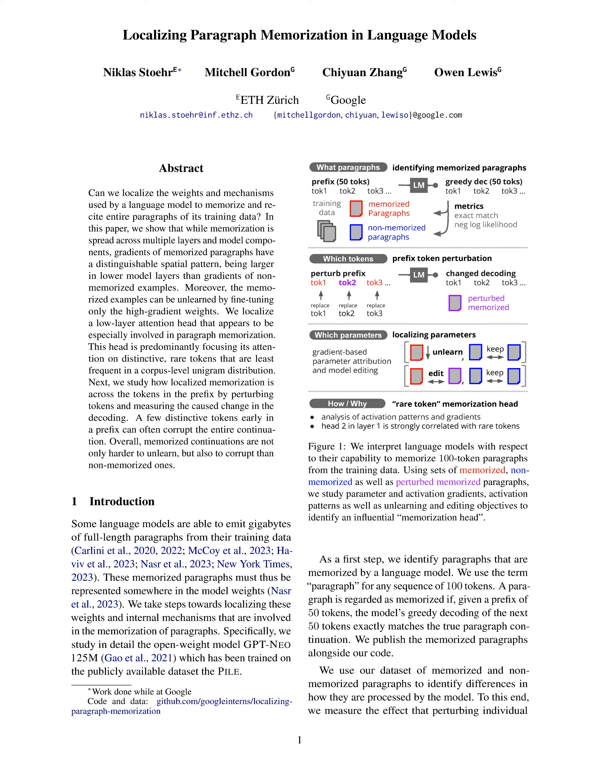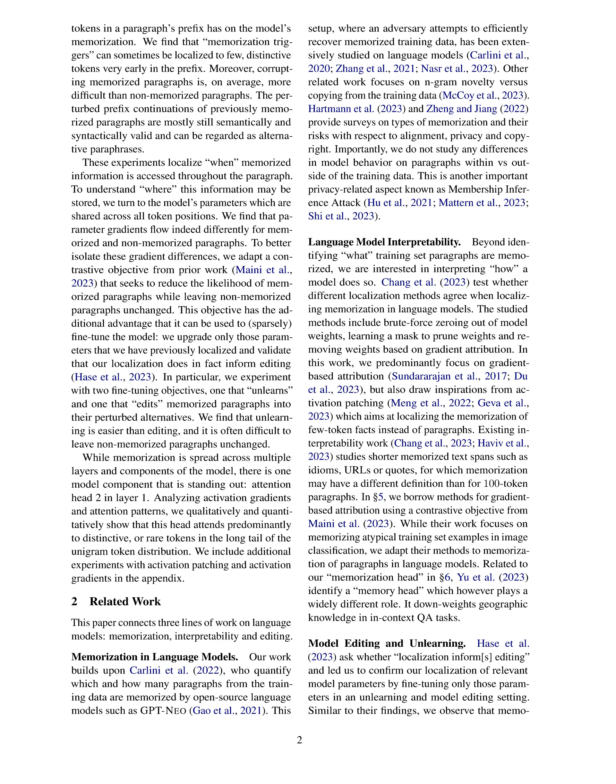The study delves into differences in how memorized and non-memorized paragraphs are processed by the model, measuring the effect of perturbing individual tokens in a paragraph's prefix on the model's memorization. Additionally, the paper explores the localization of memorization triggers, the impact of perturbing memorized paragraphs, and the differences in parameter gradients for memorized and non-memorized paragraphs. The paper also discusses the use of a contrastive objective to fine-tune the model and localize relevant parameters for editing and unlearning memorized paragraphs.